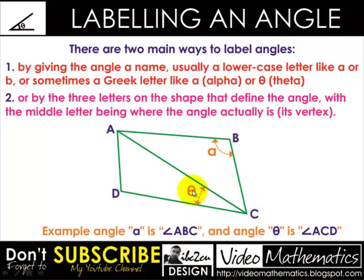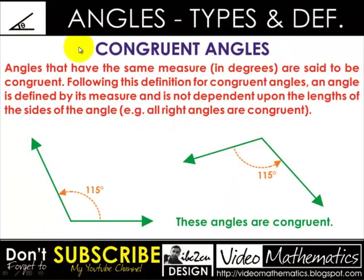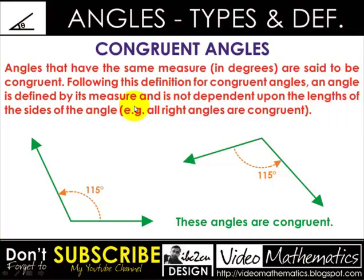After labeling, we go through the types and definitions. This type is congruent angles — angles that have the same measure in degrees or radians are said to be congruent. An angle is defined by its measure and is not dependent upon the length of the sides. Whatever the size of the sides, it doesn't matter — what matters is the amount of turn. These angles are congruent.